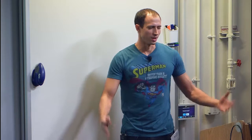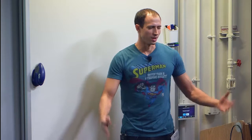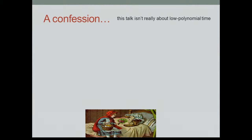Let me start with a confession — I should apologize. This talk is not really about low polynomial time. Most of the talks we've seen in this workshop are about things like n versus faster, like n-squared versus n-cubed, and most of them assumed SETH, except for the last talk whose reduction from Strong ETH was 2 to the n over 3. Here we are going to distinguish polynomial versus quasi-polynomial algorithms. We use ETH to assume that SAT requires 2 to the omega-n time, and the reduction size that we need is 2 to the root-n.